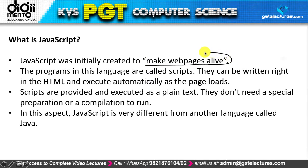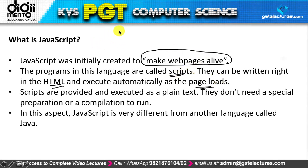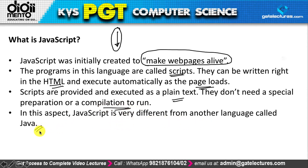JavaScript was initially created to make web pages alive — to make them interactive, showing animations and dynamic content. Programs in this language are called scripts because they can be written right in the HTML and execute automatically on page load. Scripts are provided and executed as plain text and don't need special preparation or compilation to run, making JavaScript very different from Java.